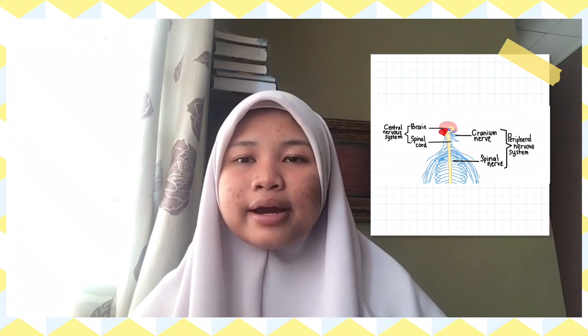The peripheral nervous system consists of 12 pairs of cranial nerves and 31 pairs of spinal nerves. The cranial nerves send nerve impulses from and to the brain, meanwhile spinal nerves send nerve impulses from and to the spinal cord.